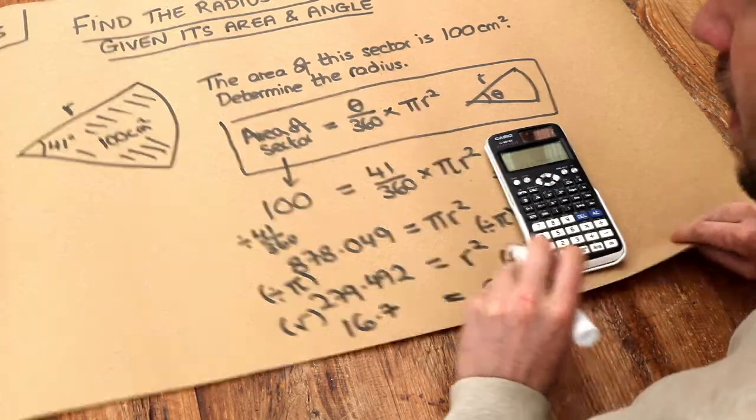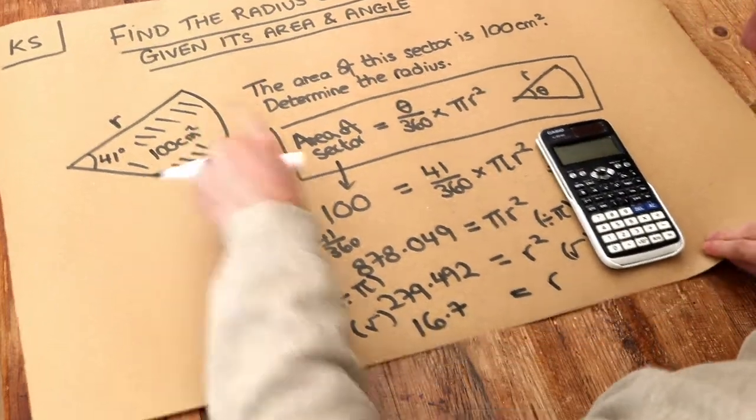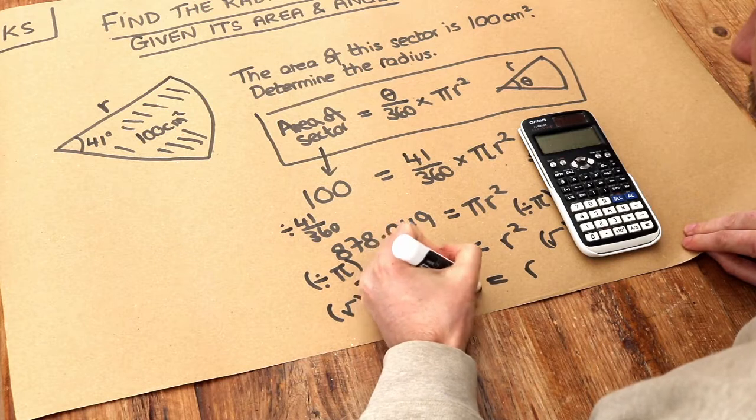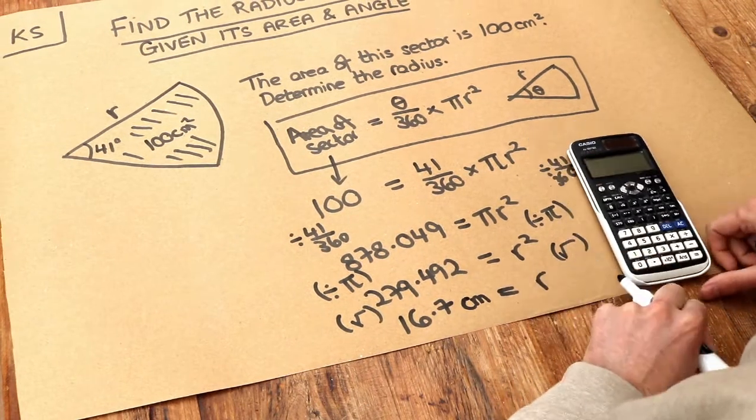And that is R, the radius. Now let's just give the unit. Well, if that was centimeters squared, this is going to be centimeters, and that is the final answer.